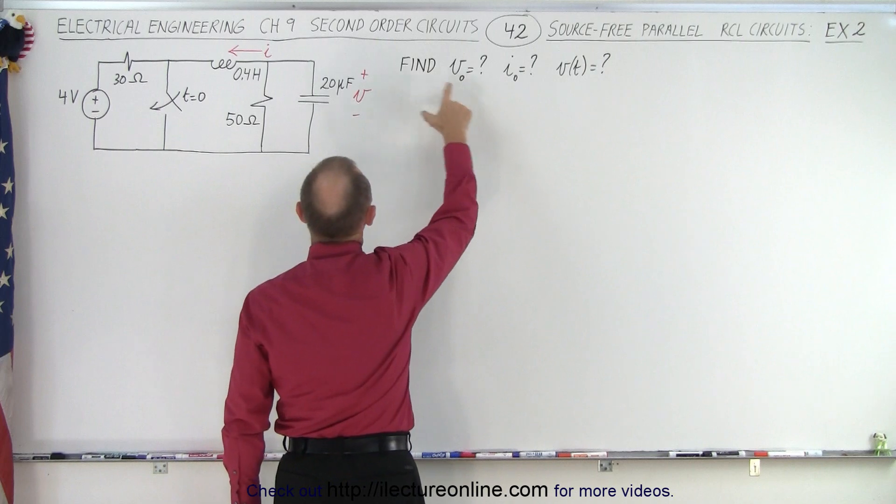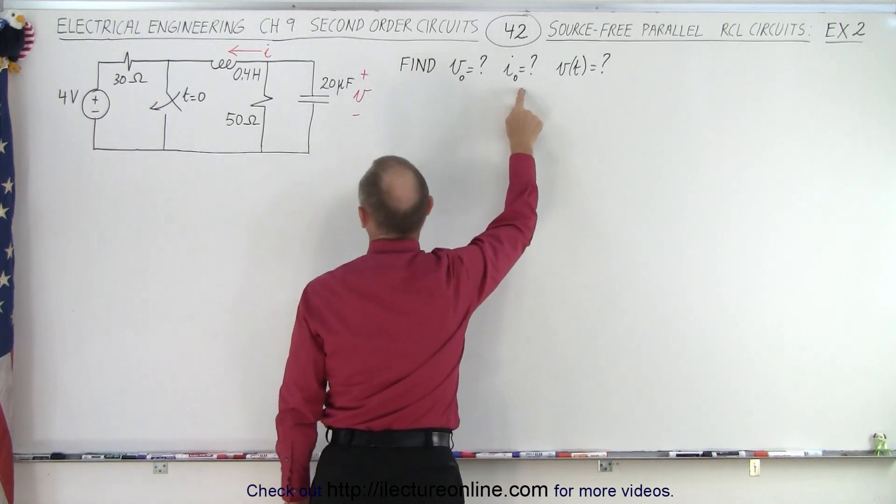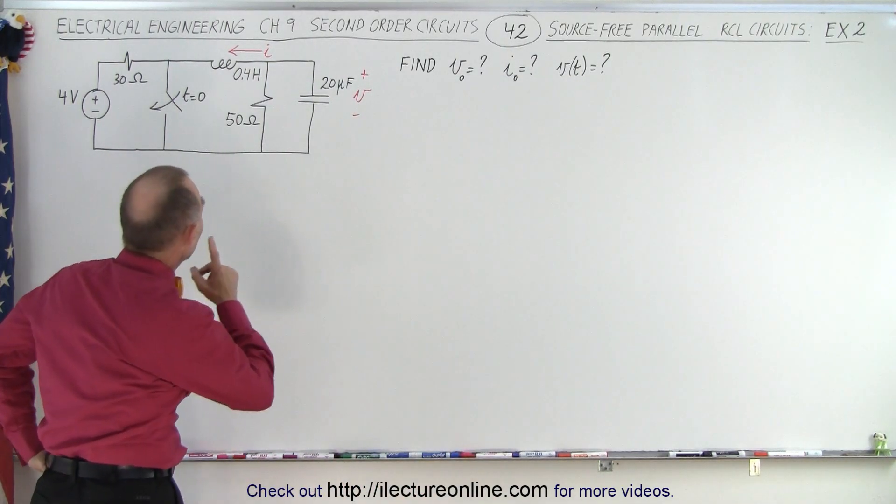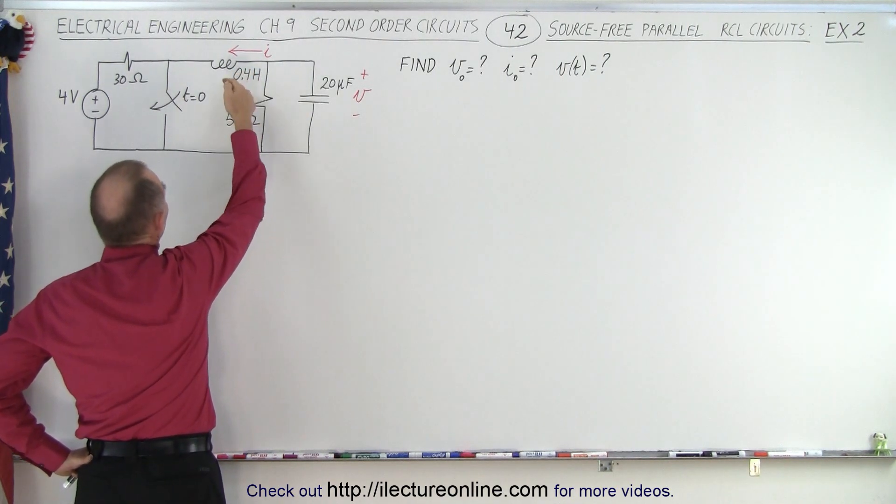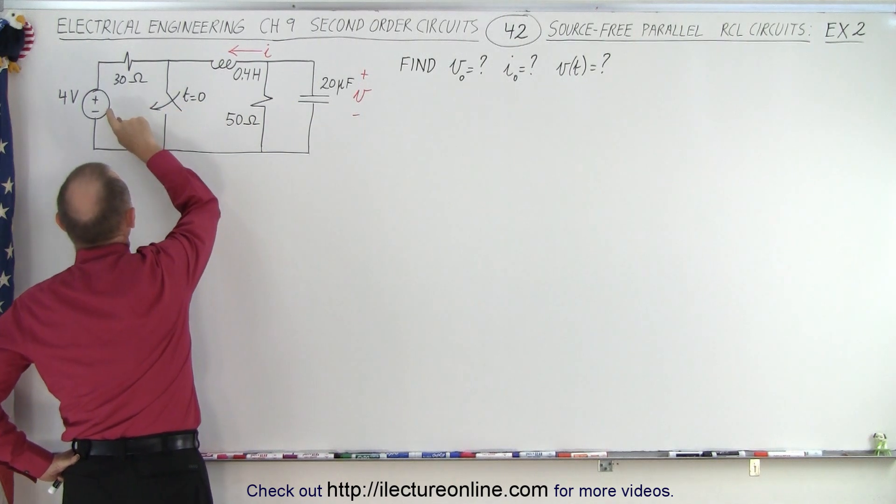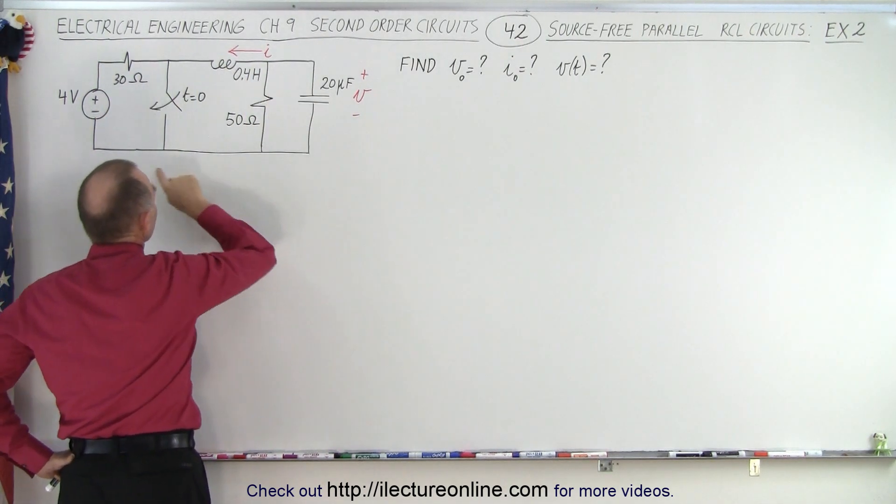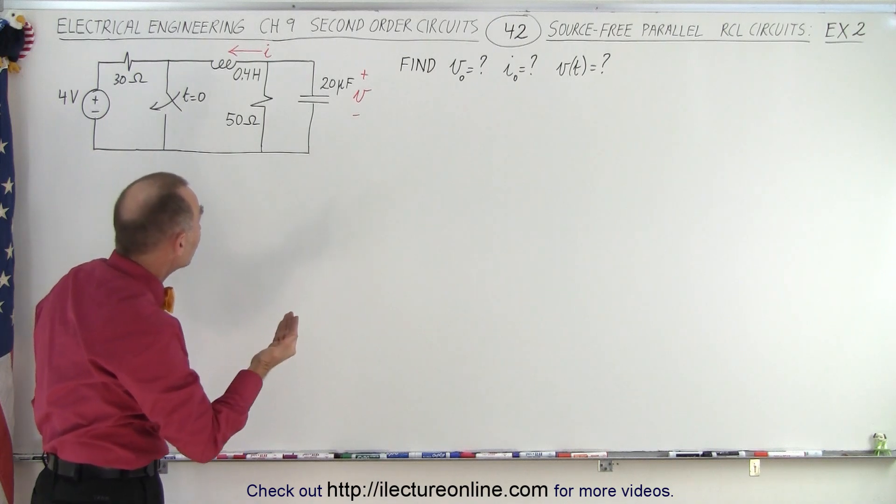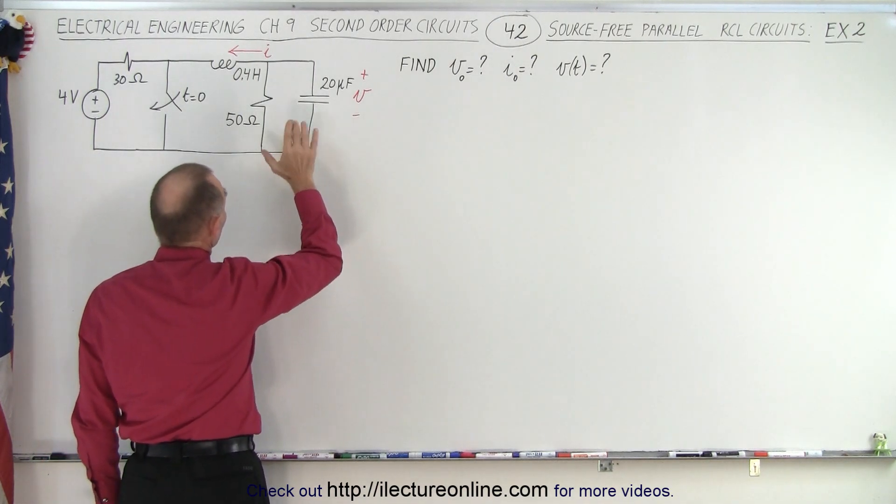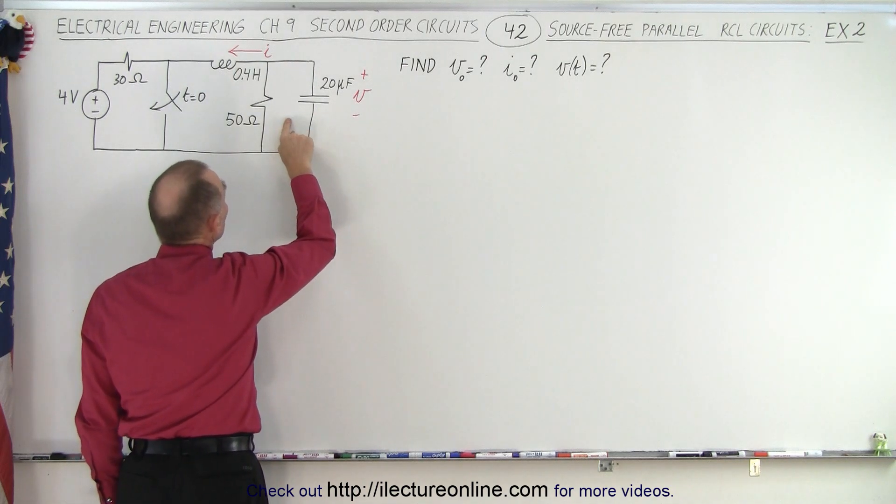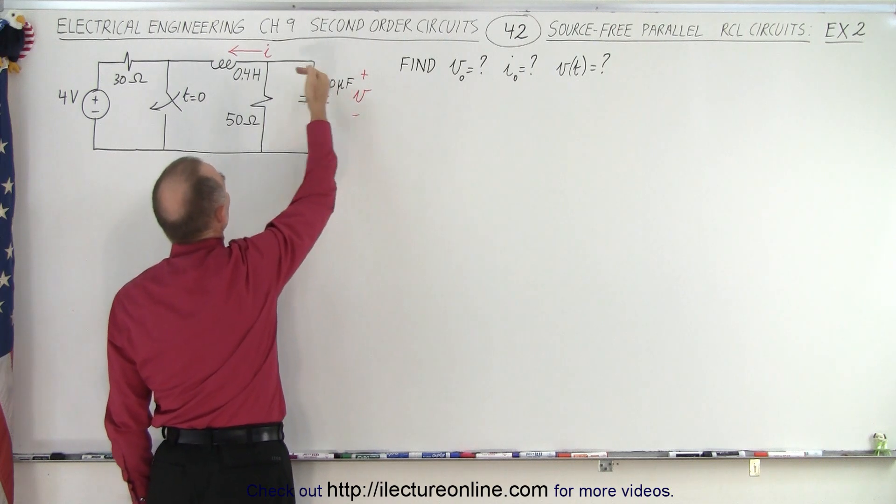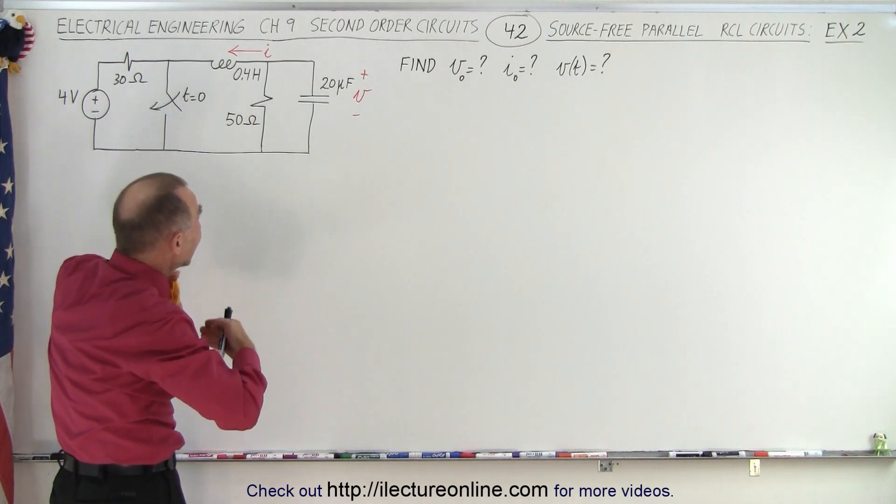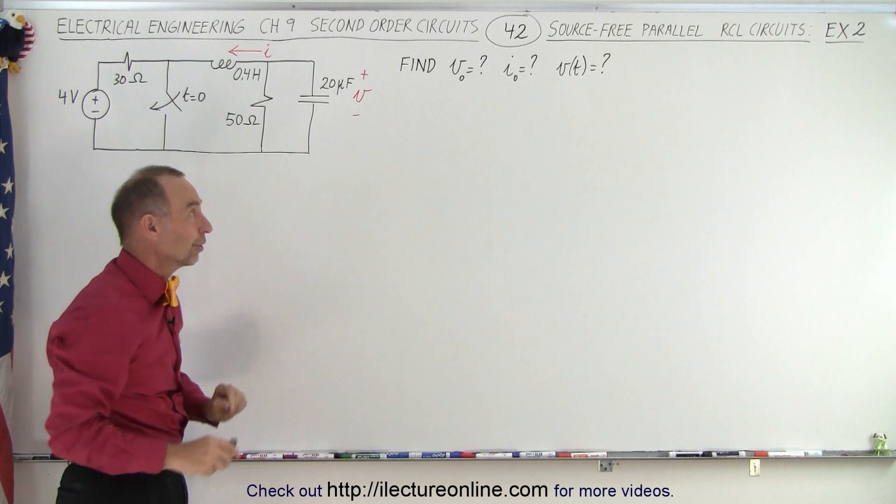We're supposed to find the initial voltage across the capacitor, the initial current through the inductor, and the equation for the voltage as a function of time. Now notice we have the current through the inductor drawn from right to left, and we realize that before we close the switch, the source will drive current through the circuit this way. So why do we indicate the current through the inductor from right to left? Well, it turns out that by convention, in an RCL source-free circuit where the components are parallel to one another, we draw the current from the positive voltage of the capacitor through the inductor, which is therefore from right to left. But the initial current will go from left to right, so the initial current will be a negative quantity relative to the direction of that arrow.